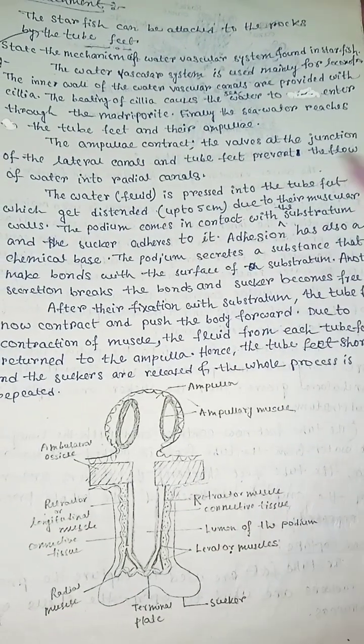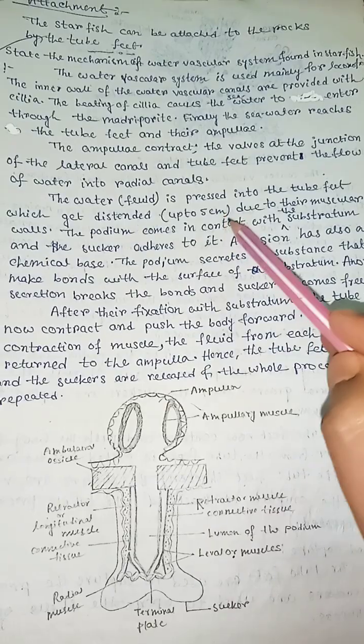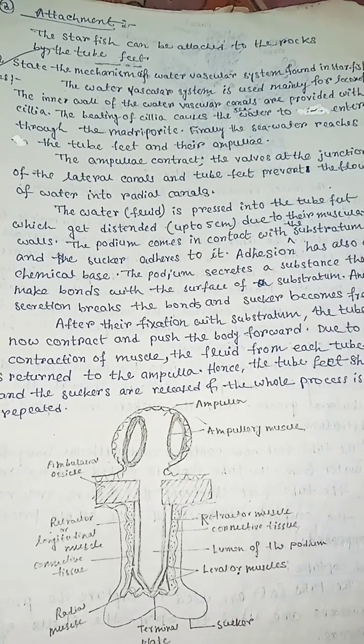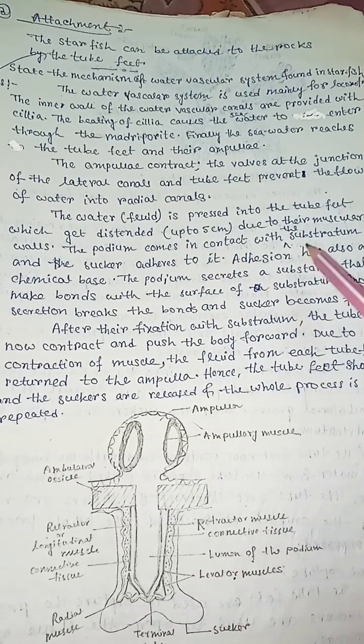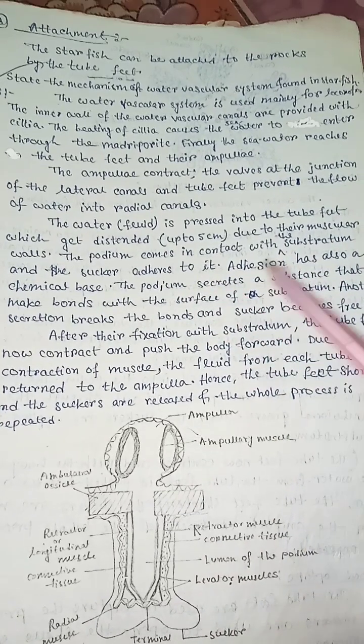The water is placed into the tube feet which get distended up to 5 cm due to their muscular walls. The podium comes in contact with the substratum and the sucker adheres to it.